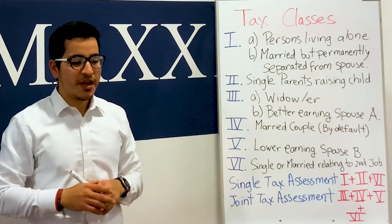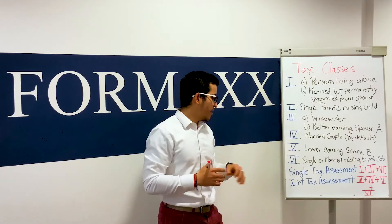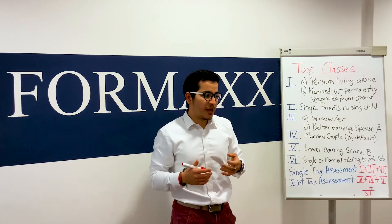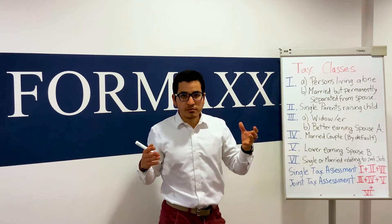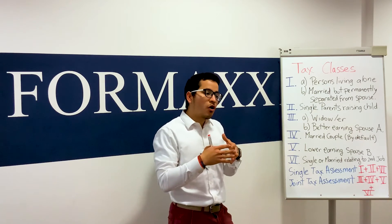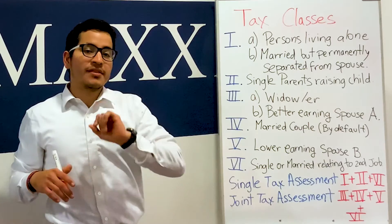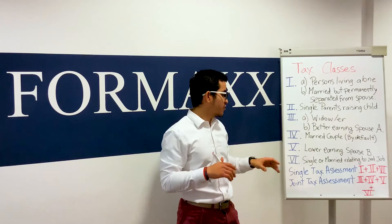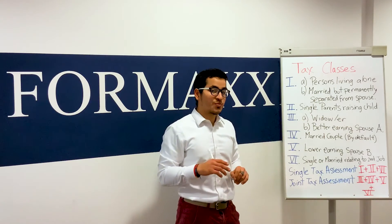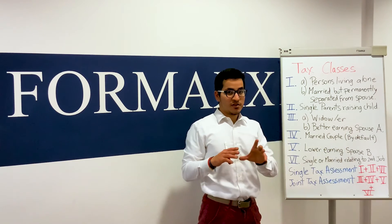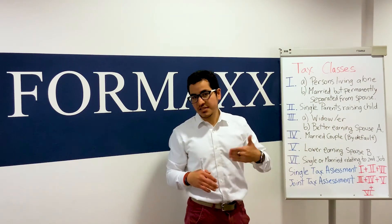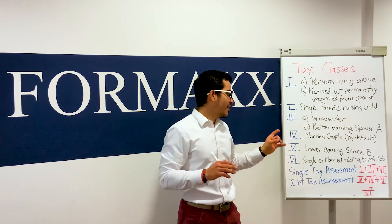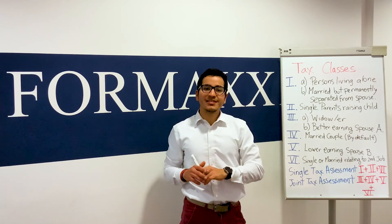And how does this all come together? It is important to understand that in the taxes, you either can file the single tax assessment — which means you have only one tax break used for yourself, or also one for your additional children if you are raising them alone. Or you can jointly file the taxes together with your spouse, which means you get double as many tax breaks. That's for tax classes three, four, and five. Class six applies if you have more than one job, and the single tax assessment is for classes one, two, and six.